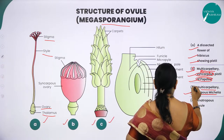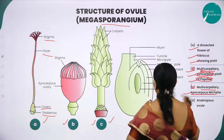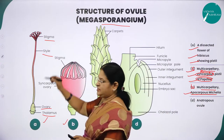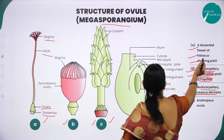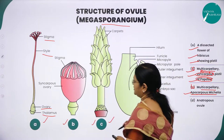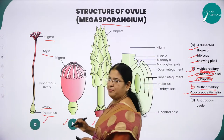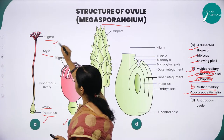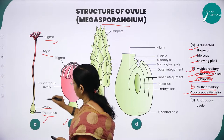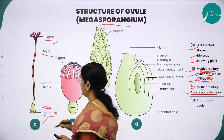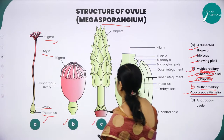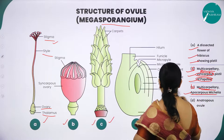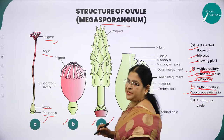The second picture shows multicarpellary syncarpous pistil of papaver, and the third picture shows multicarpillary apocarpous michelia. The first picture is a dissected flower of hibiscus showing the pistil or gynoecium, which consists of three parts: stigma, style, and ovary.